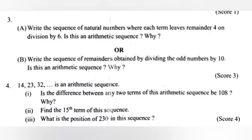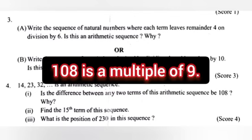Problem 4: 14, 23, 32, etc. is an arithmetic sequence. Part 1: Is the difference between any two terms of this arithmetic sequence 108? Why? Answer: Yes, 108 is a multiple of 9.